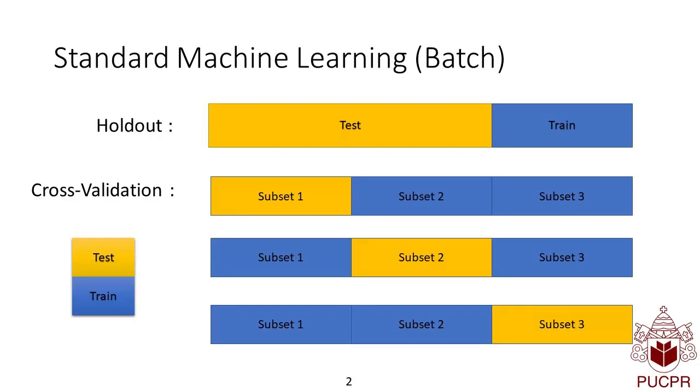While in standard machine learning, known as batch learning, we have all instances stored in memory, that means that we can have access to instances whenever we want.